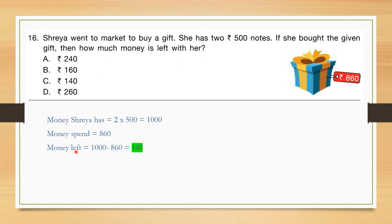Question number 16: Shaya went to market to buy a gift. She has 2 rupees 500 notes, so total money is 2 × 500 = Rs. 1000. She purchased a gift box for Rs. 860. Amount remaining is 1000 minus 860 which is 140. So the correct answer is option C.